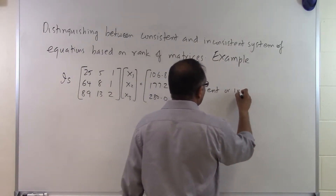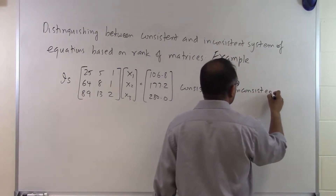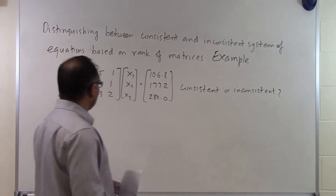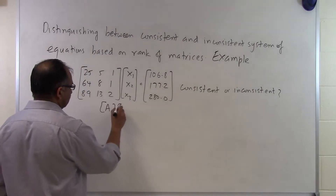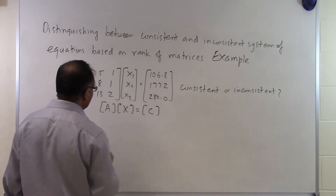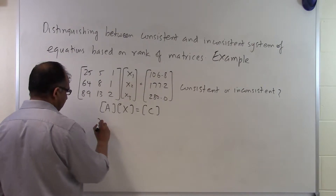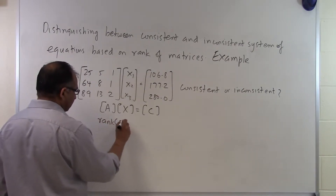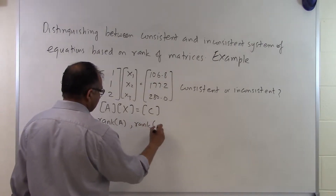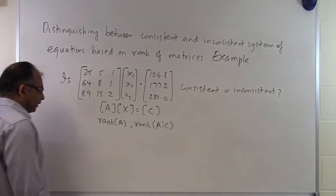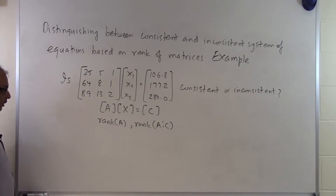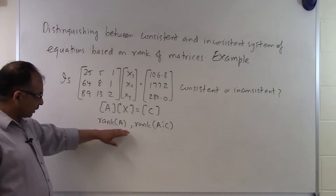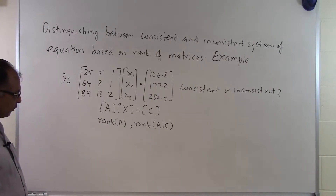Consistent or inconsistent? To figure out whether this system of equations is consistent or inconsistent, we write it in symbolic form and determine the rank of A and the rank of the augmented matrix. If rank(A) equals rank(augmented matrix), the system is consistent. If rank(A) is less than rank(augmented matrix), it is inconsistent.